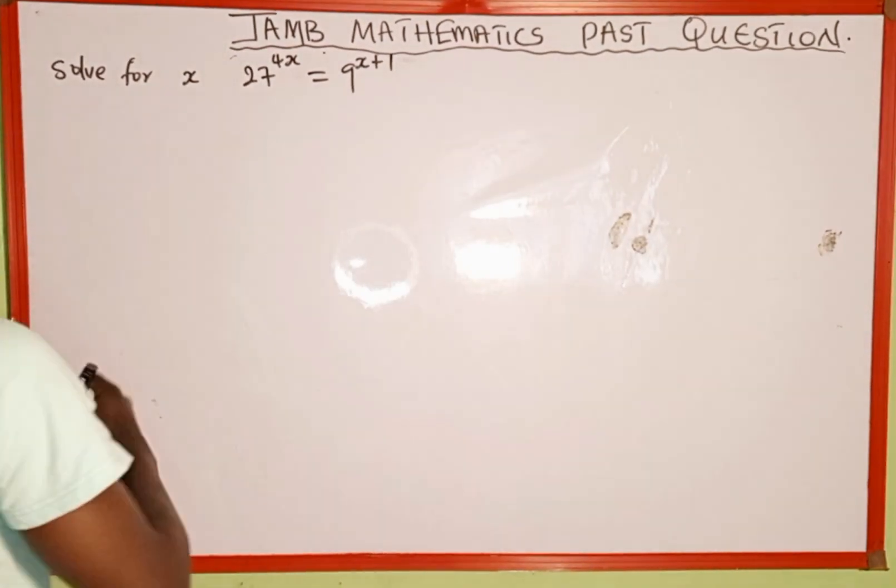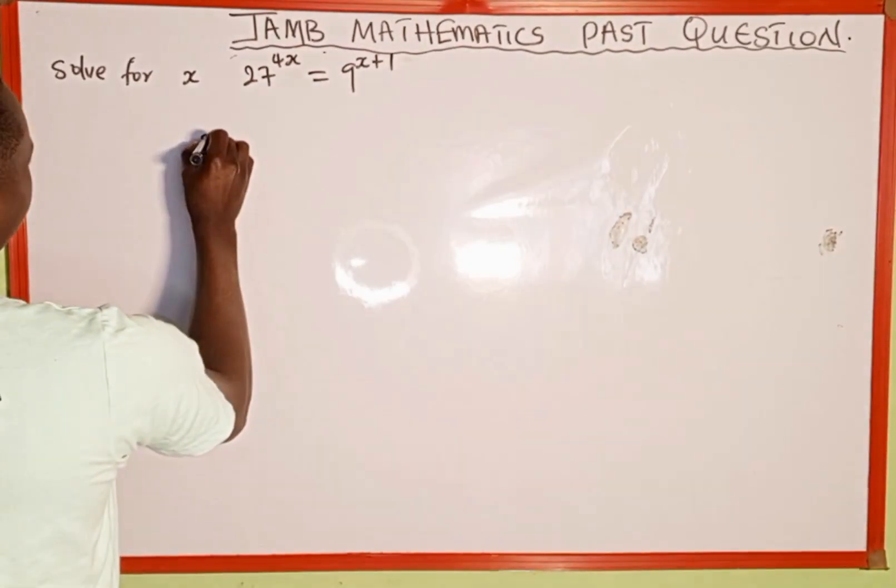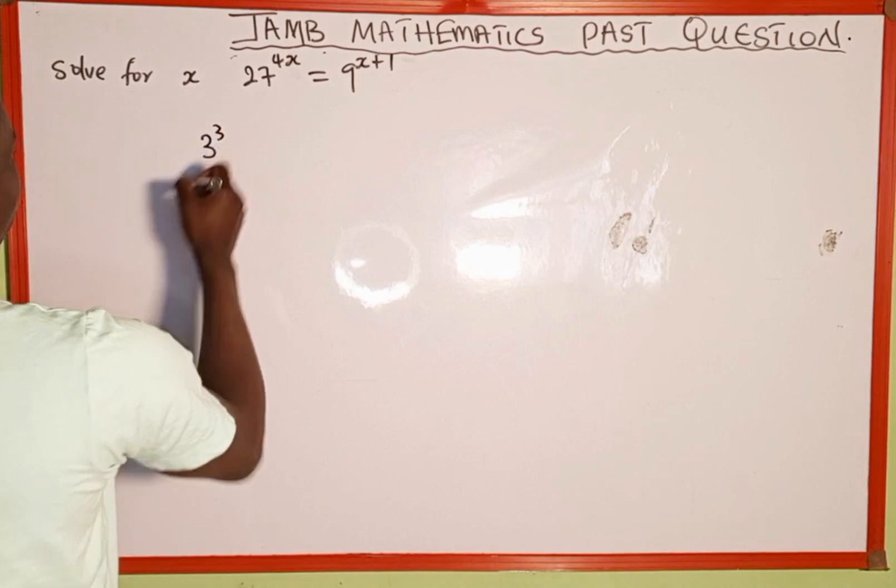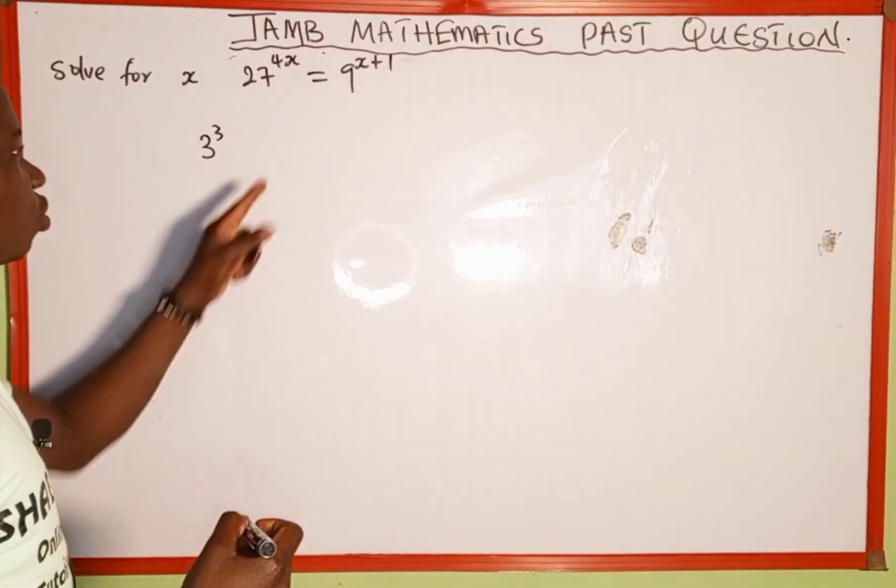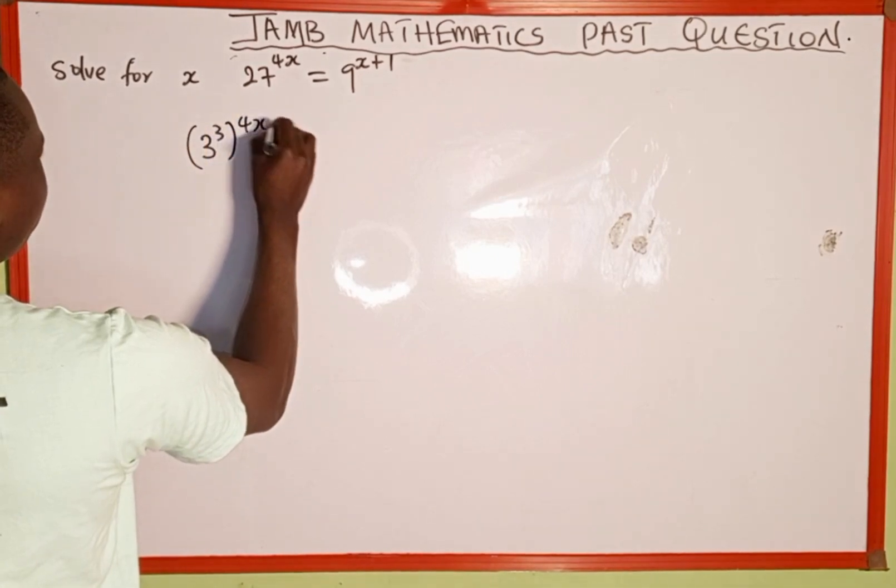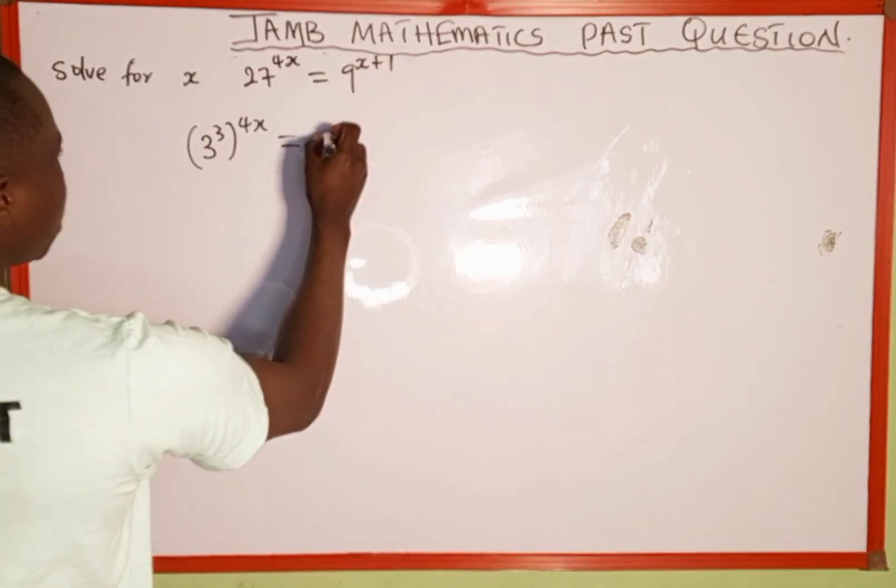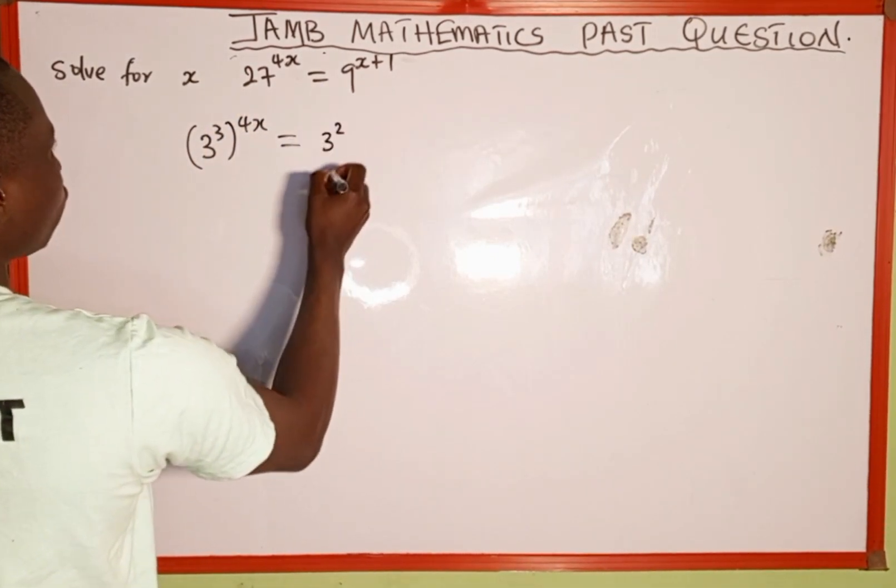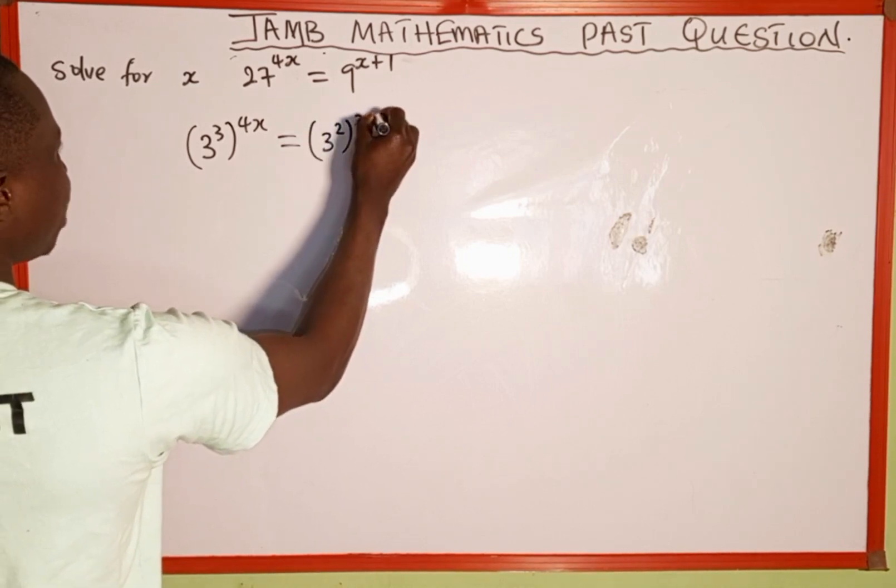This 27 in index form can also be written as 3 to the power of 3. When you multiply 3 by 3 by 3, it gives us 27, and everything raised to the power of 4x, which equals 9, which is the same as 3 to the power of 2, then raised to the power of x plus 1.